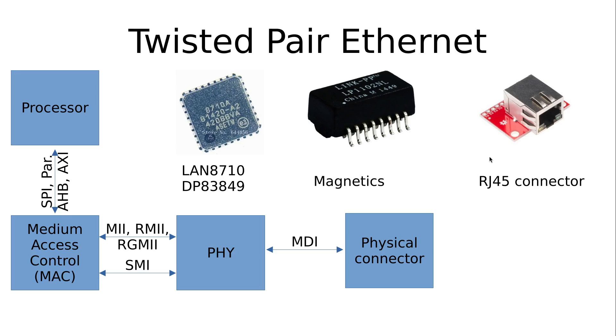Okay, so let's take a look at some connectors we can use. Up to the PHY everything is the same regardless which physical connector we are using. So if we are using twisted pair Ethernet we can use some PHYs like the LAN8710 from Microchip or the DP83849 from Texas Instruments. Then the analog outputs of the PHY are connected to a magnetic transformer and the output of the transformer is then connected to an RJ45 connector.